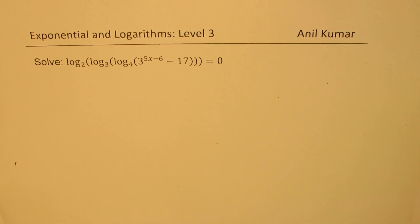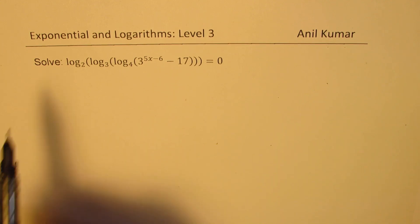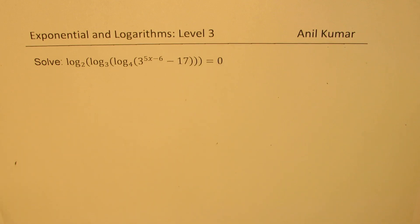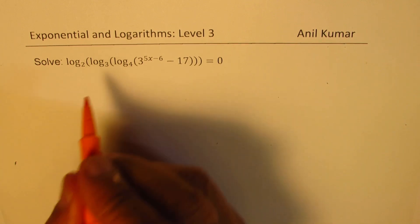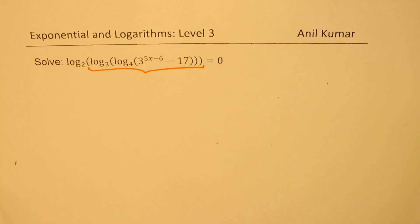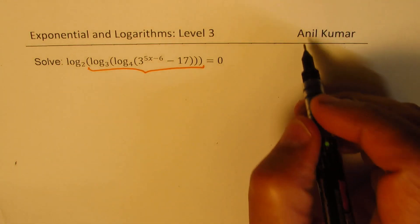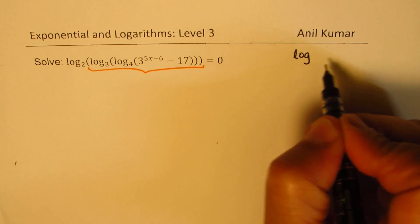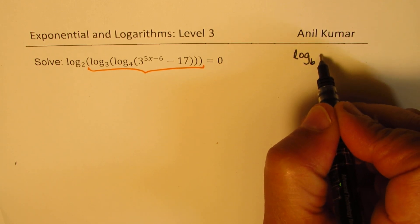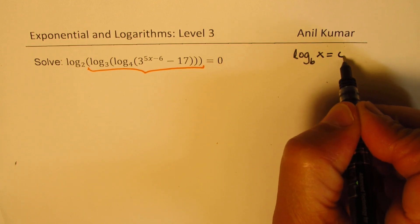You can always pause the video, answer the question, and then look into my solutions. Right now we are saying log to the base 2 of all this is 0. It means that all this should be equal to 1, since we know that log of any base B of x equals 0 means x equals 1.